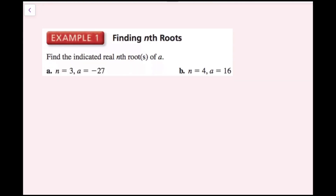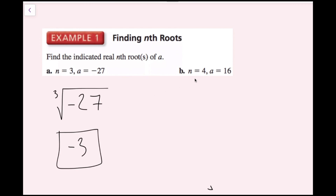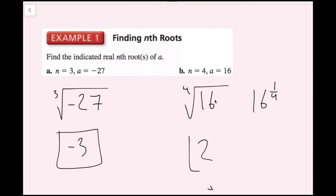For example 1, we're finding the indicated real n-th roots. First, find the n-th root of negative 27 when n equals 3 — that's the cube root of negative 27. We want a number multiplied 3 times equal to negative 27, which is negative 3, because negative 3 times negative 3 times negative 3 equals negative 27. Second, find the n-th root of 16 when n is 4 — the 4th root of 16, or equivalently 16 to the 1/4 power. What number multiplied 4 times equals 16? That's 2, because 2 times 2 times 2 times 2 equals 16.